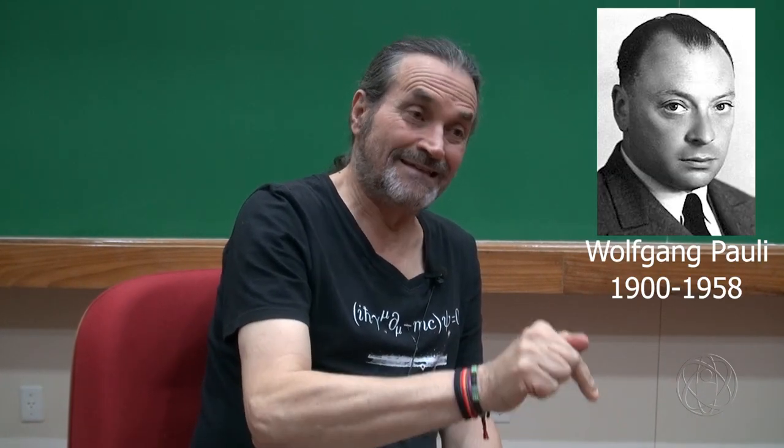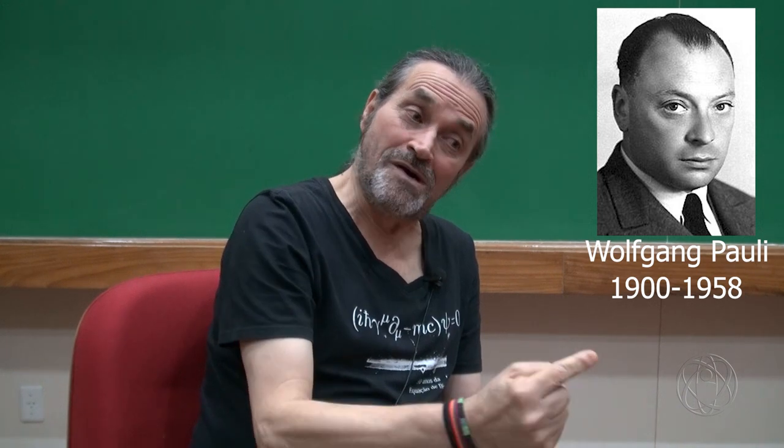Isso era uma questão contextualizada, porque o físico suíço Wolfgang Pauli tinha tentado, em 1927, um ano antes, incorporar a relatividade restrita dentro da mecânica quântica. Não conseguiu. Então, Dirac herdou essa questão e a conhecia. Além de tudo, é uma questão muito significativa do ponto de vista da física.